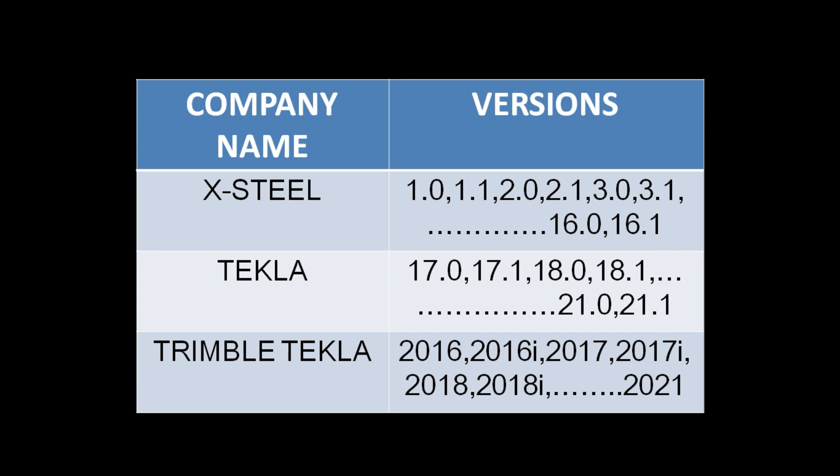Looking at this table, you will get a clear explanation about the versions. The company name is on the left-hand side and the versions on the right. The first one is Xsteel, which was the original name before the software was renamed. They launched two versions per year: 1.0 and 1.1, then 2.0 and 2.1, and so on. Version 1.0 is a general or regular version, and 1.1 is an intermediate version. This pattern continued up to 16.0 and 16.1.